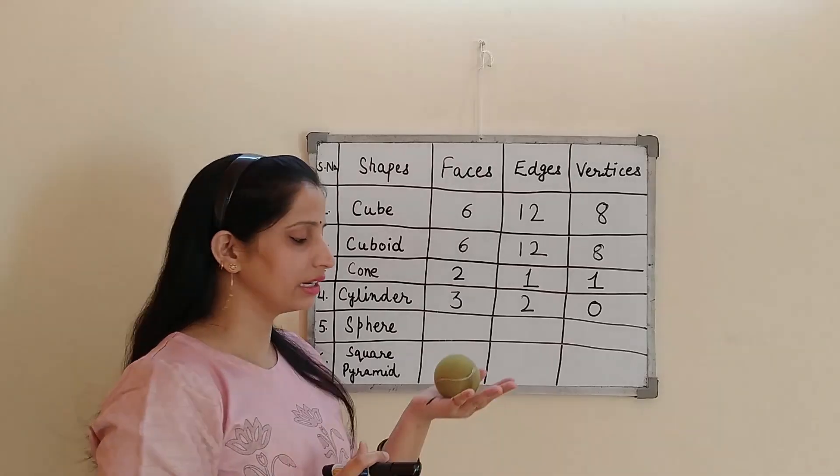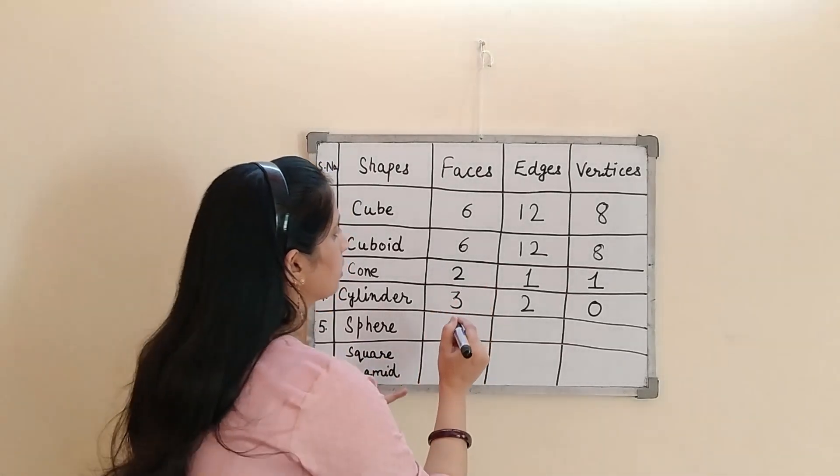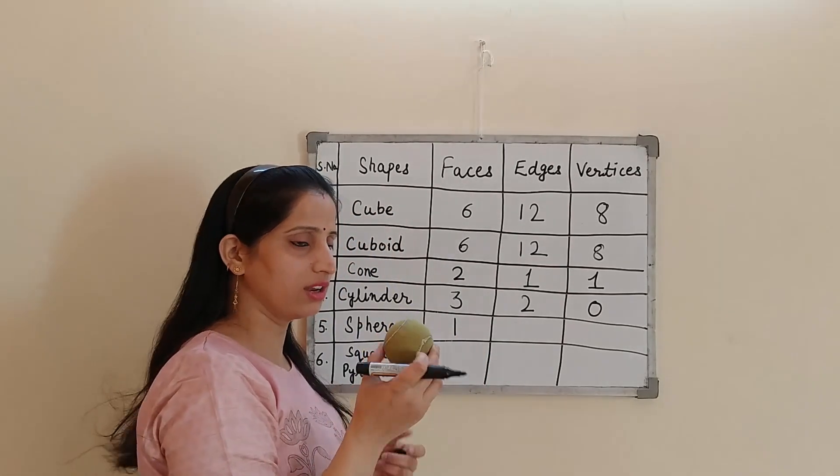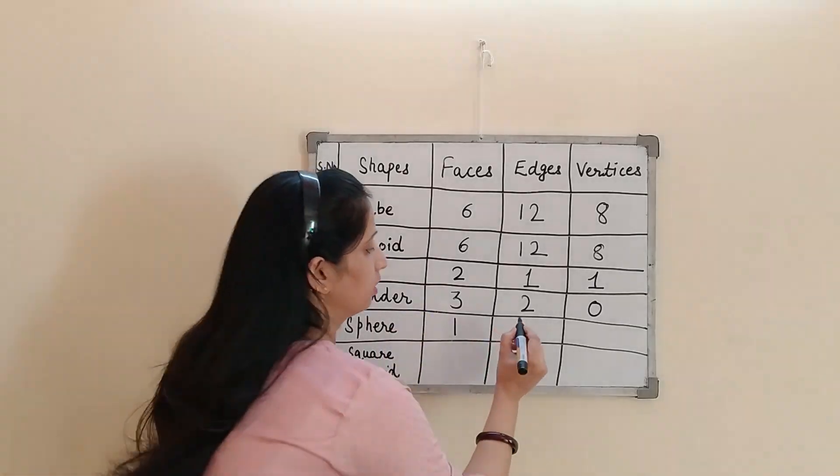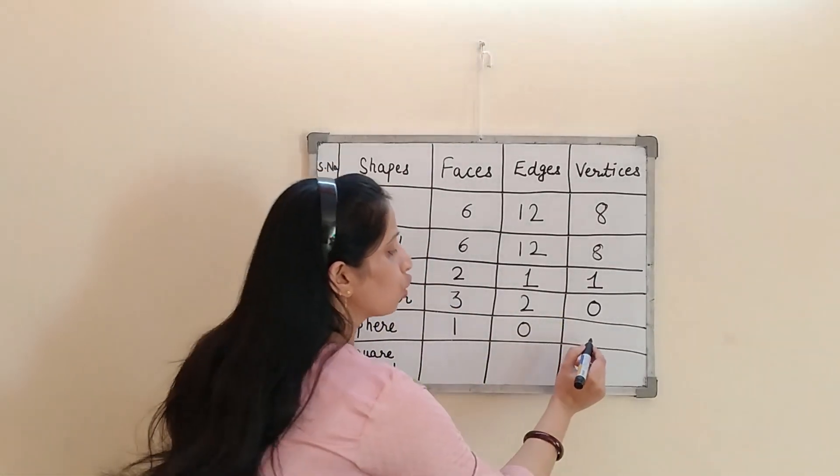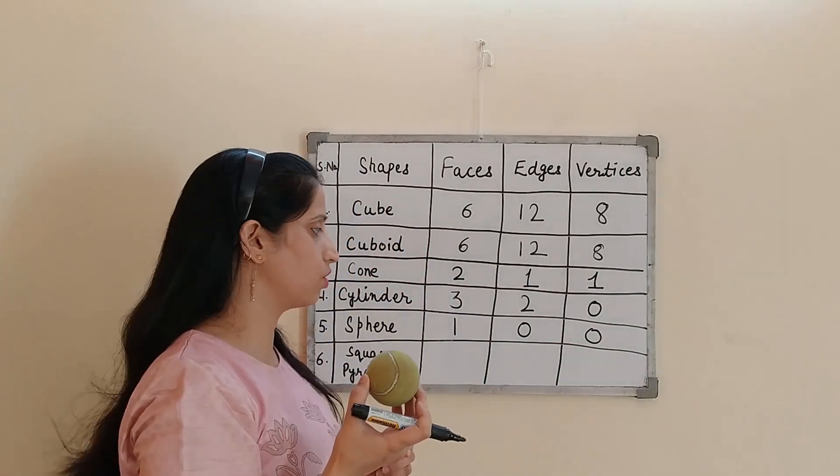So in sphere, number of faces. It has only 1 face. 1 curved surface. So number of faces is only 1. There is no edge in this ball. This ball is sphere in shape. There is no edge. So number of edges is 0. Number of vertices is also 0. There is no vertex. There is no corner in this ball. You can't see any corner.